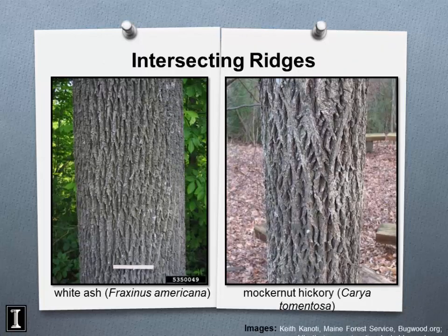Here's the interlacing diamond pattern frequently seen in mature white ash and green ash, and on the right is mockernut hickory. White ash can also develop a blocky bark pattern that actually looks like persimmon. So bark alone won't always be definitive — it's just part of your toolkit.